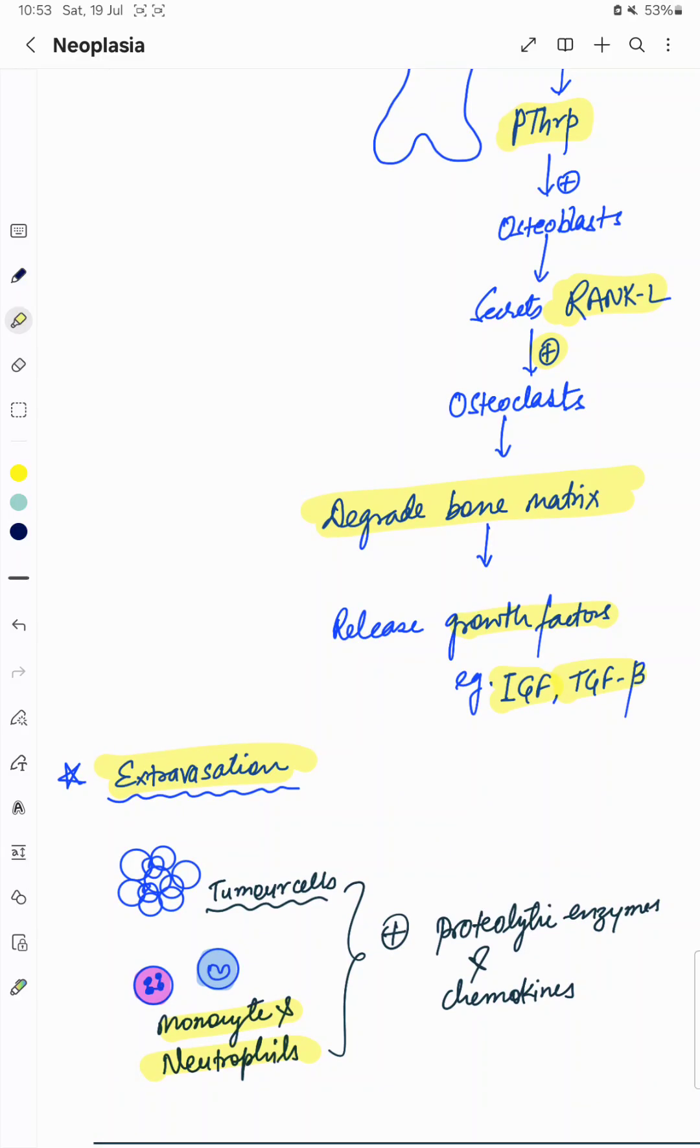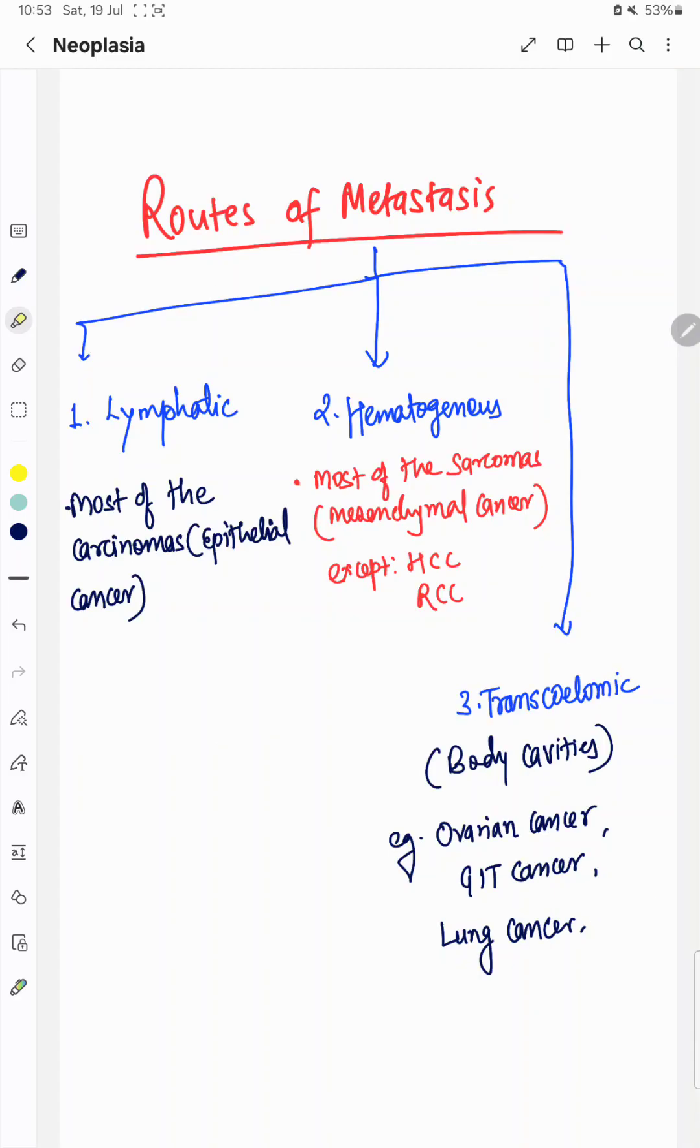Now we will see about the various routes of metastasis. There are various routes of spread of cancer from primary site of origin to distant organ. First is lymphatic route. Most of the carcinomas follow this route.